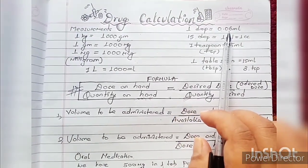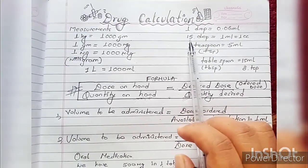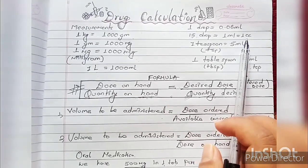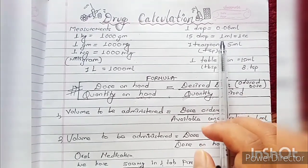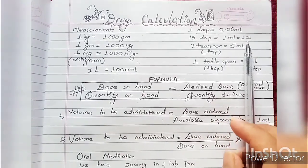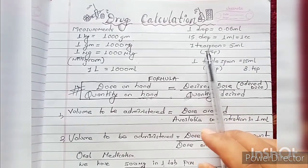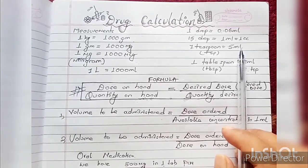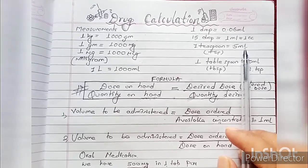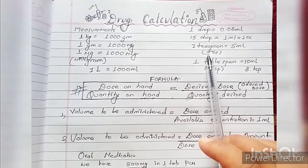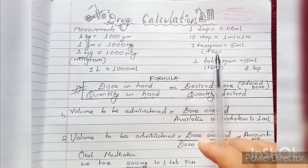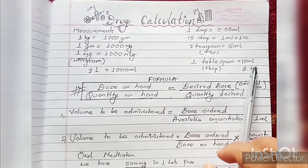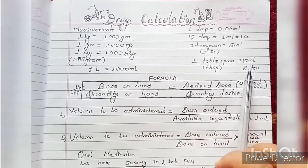1 drop equals 0.6 mL, 15 drops equals 1 mL, which also equals 1 cc. CC and mL are the same. And 1 teaspoon equals 5 mL. 1 tablespoon equals 15 mL, which is 3 teaspoons.